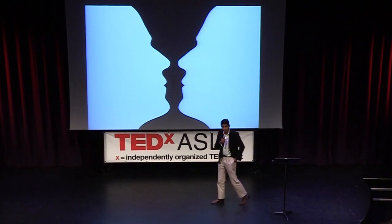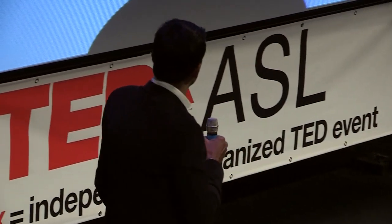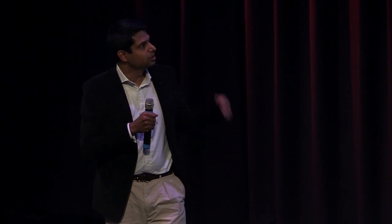The Rubin vase is a famous optical illusion developed in around 1915 by the psychologist Edgar Rubin. The vase presents the viewer with a choice of two alternative mental interpretations: either two white faces on a black background, or on the other hand, a black vase on a white background.